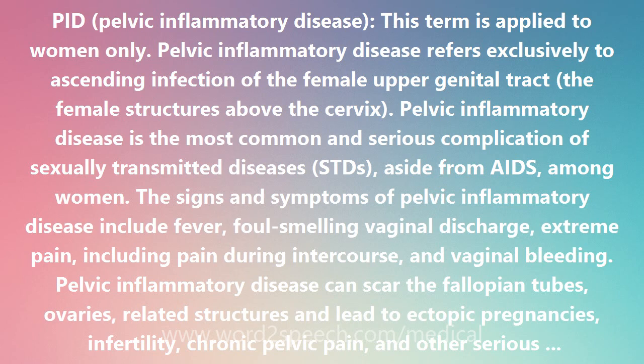Women with STDs are at greater risk of developing Pelvic Inflammatory Disease. A prior episode of PID increases the risk because the body's defenses are often damaged during the initial bout of upper genital tract infection. Sexually active teenagers are more likely to develop PID than older women. The more sexual partners a woman has, the greater her risk. Women who douche once or twice a month may also be more likely to have PID, as douching may push microorganisms into the upper genital tract and can mask the discharge, causing the woman to delay seeking health care.